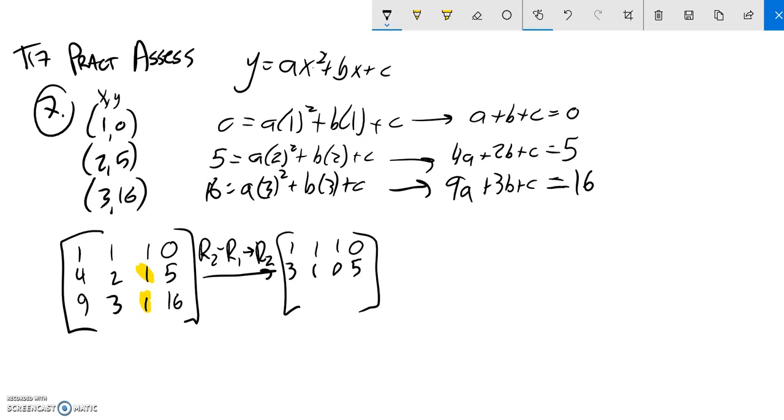So now I'll make a zero here. And I could do it by going row 3 minus row 1. I'm going to go row 3 minus row 2 just because my numbers will be smaller. So I'm going to go row 3 minus row 2 into row 3. It doesn't really matter if I did row 2 or row 1.